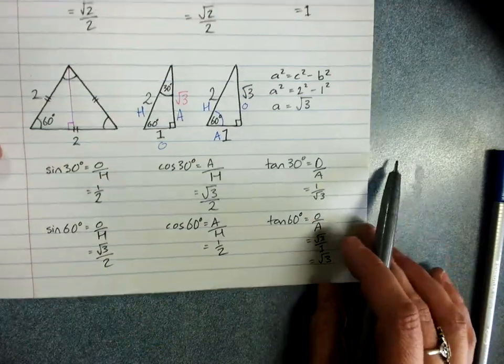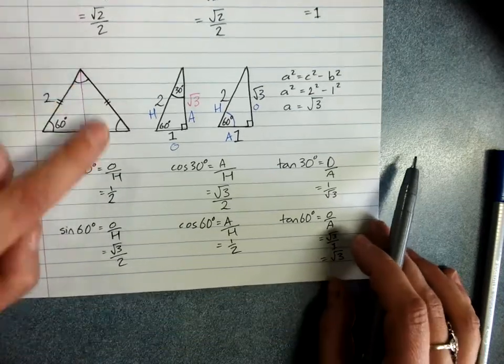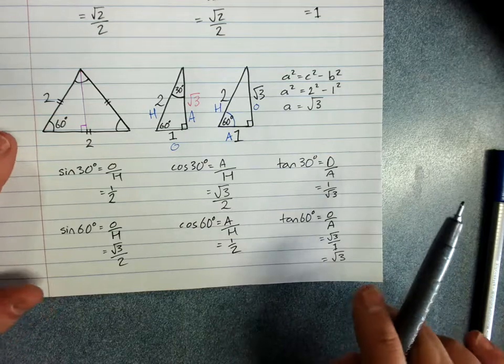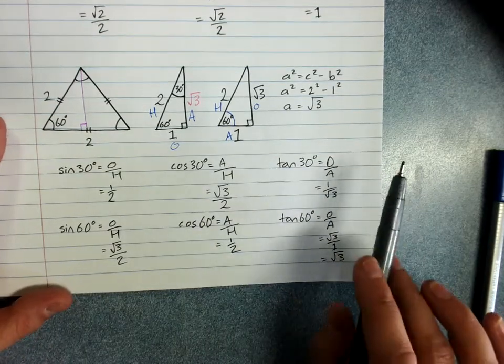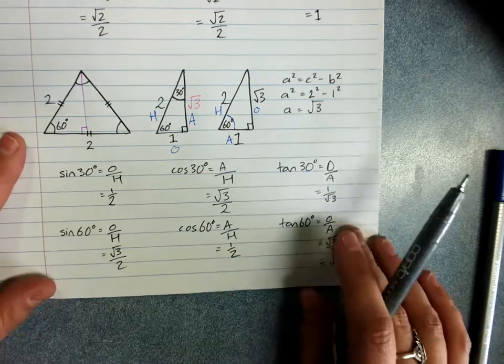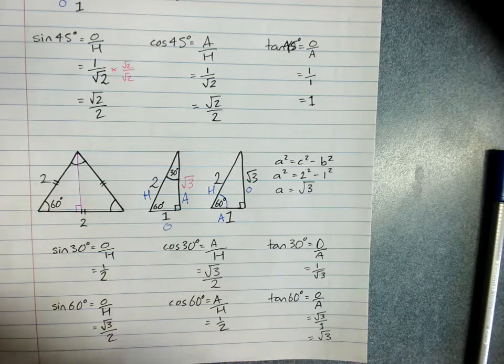So these are the exact values for 45 degrees, 30 degrees, and 60 degrees. We will also need to know the exact values for a couple of other things: 0 degrees and 90 degrees to start with. These are the exact values that you get from a triangle.